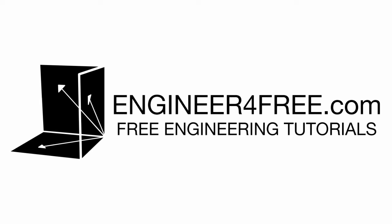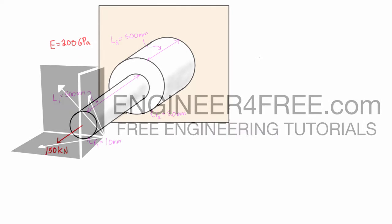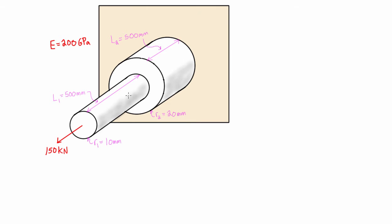Welcome back. In this video we want to calculate the total deformation of a rod with varying cross-section that's subjected to an axial load. The way that we do this is we use that same formula — our total deformation is equal to PL over AE.